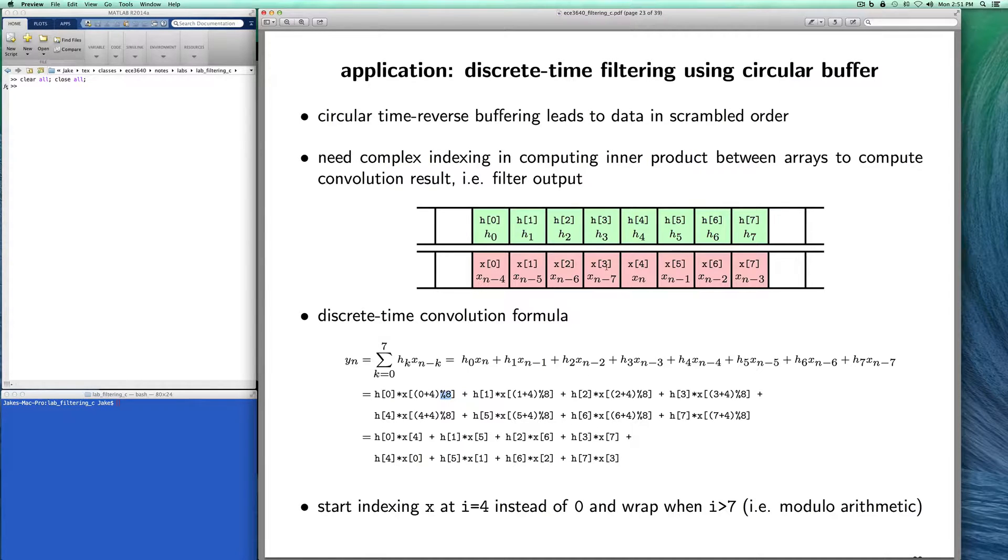When you apply these modulo operations you get these products that are shown down below and these are exactly the products that you want because I want h0 times xn, and that's in h0 and x4 so that's the first product here. Then we want h1 times xn minus 1, that's going to be obtained through the product of h1 and x5. At some point we wrap around and we want the product of h4 times xn minus 4. In a linear shift array that would be over here, but now that we're doing circular indexing that's back over here. That term is this one, I have h4 times x4 plus 4 mod, that's 4 plus 4 is 8 mod 8 which is actually x0. You see that the modulo operation is actually doing the correct circular indexing for us.